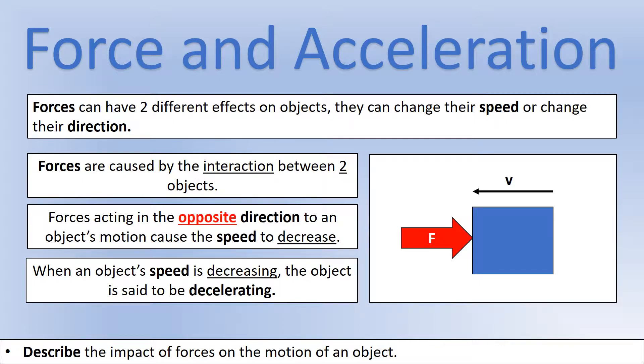If we have a force in the opposite direction to the object's motion — we can see that the object is traveling to the left but the force is acting to the right — that will cause the speed of the object to decrease. When an object's speed is decreasing, we say that object is decelerating.